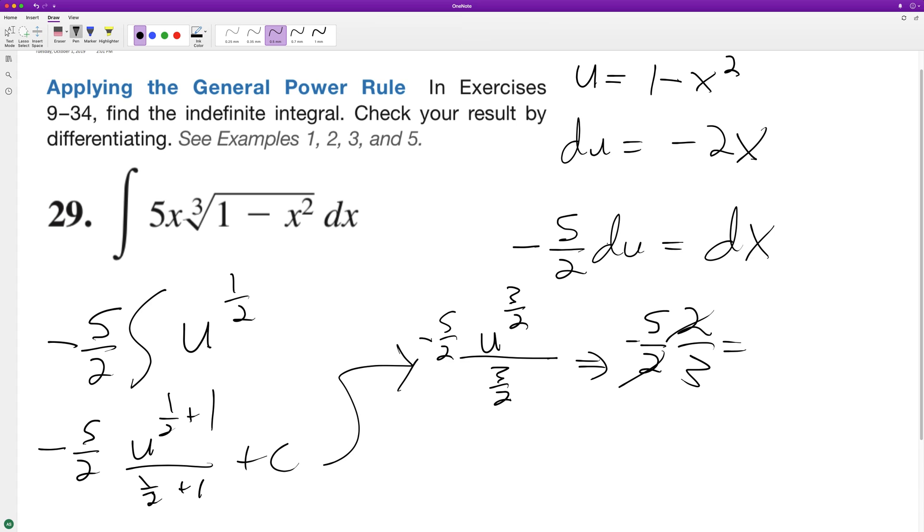So we end up with negative five thirds u raised to the three halves, plus C.